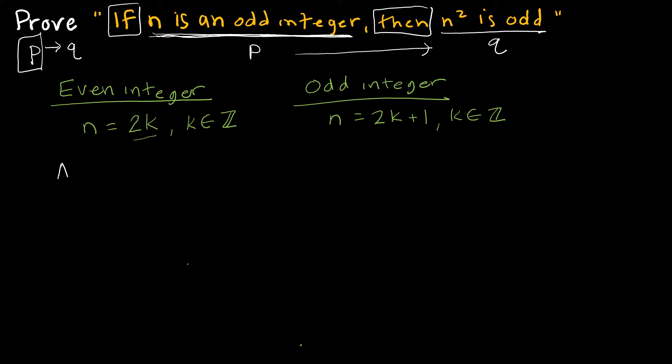When we start a direct proof, we assume p is true. So I'm going to assume n is an odd integer. Based on that, then I'm going to use my definition of an odd integer that says then n equals 2k plus 1, where k is some other integer. And now I'm going to go about proving, or I can say by definition of an odd integer.